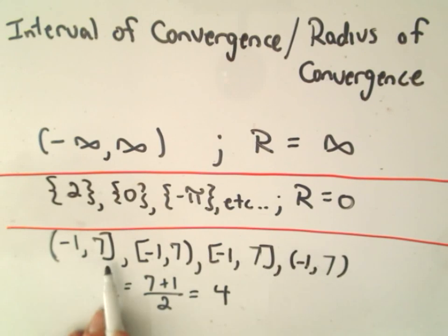If we go from negative 1 to 7, that has a length of 8, divide it by 2, and we would simply say the radius of convergence is 4.